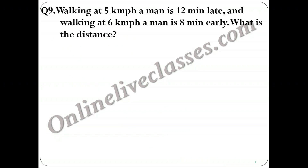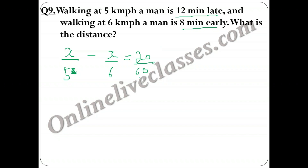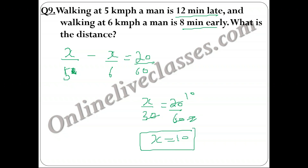Question 9: Walking at 5 km/hr, a man is 12 minutes late. Walking at 6 km/hr, he is 8 minutes early. The time difference is 20 minutes = 20/60 hours. Using x/5 − x/6 = 20/60: (6x − 5x)/30 = 20/60, so x/30 = 1/3, giving x = 10 km. So the distance is 10 km. Kindly pause the video and note down the solution.